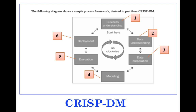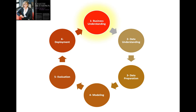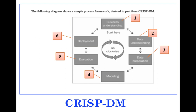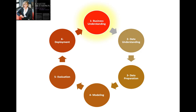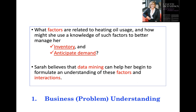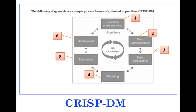We go again to the CRISP-DM model — the data mining framework. You have to go through every single step. First, understand the business problem: here we are trying to help Sarah figure out the variability in the market and the selling of heating oils. Second, go to her data and understand it. Third, do data preparation — handle missing data or inconsistencies. Then start modeling using correlation. After that, evaluate the results and deploy, which means advise Sarah on actions regarding her customers.